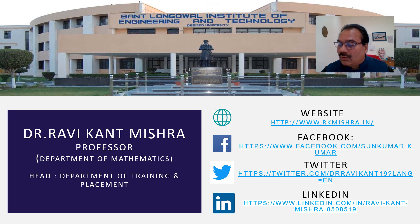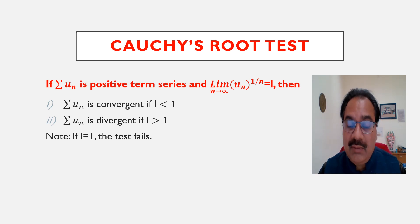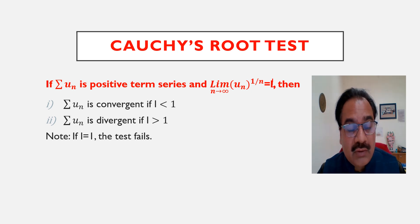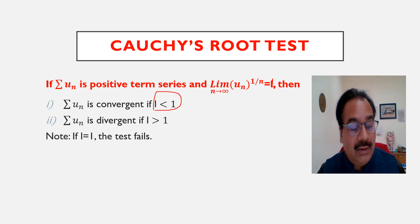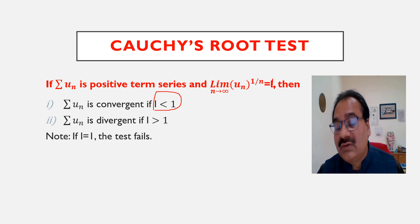Let us look at the meaning of the root test — Cauchy's root test. If summation of u_n is a positive term series and limit as n tends to infinity of u_n^(1/n) equals L, then summation of u_n is convergent if L is less than 1, and divergent if L is greater than 1. Note: if L equals 1, then the root test fails.